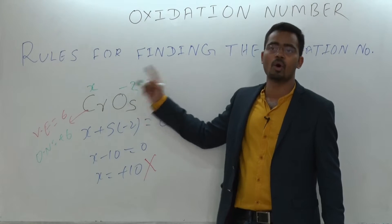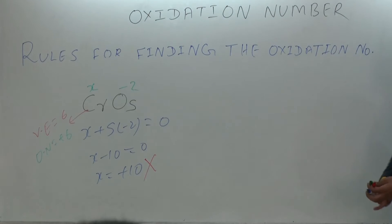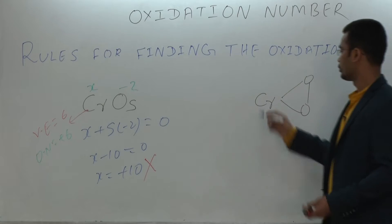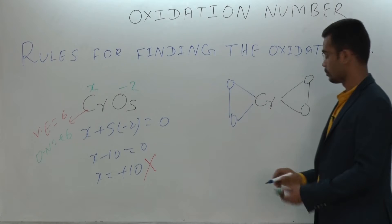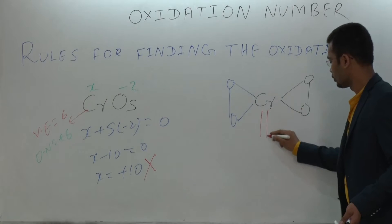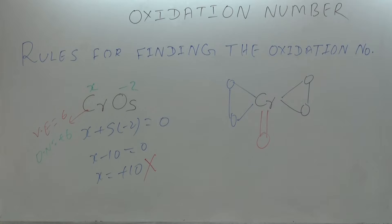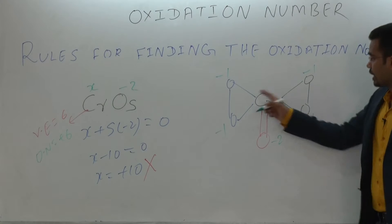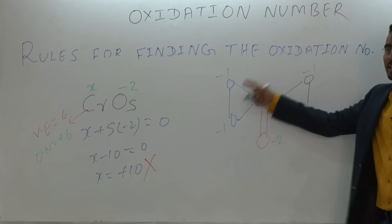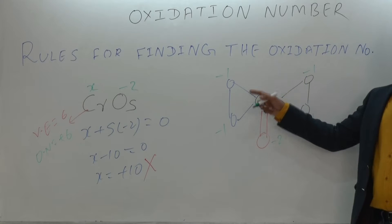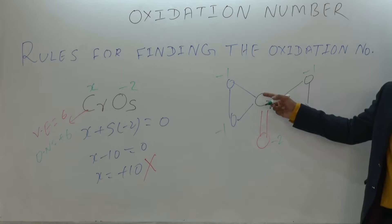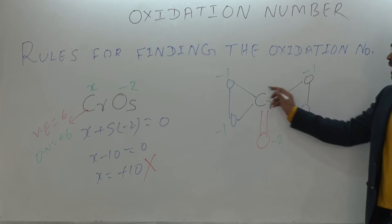The reason is that CrO₅ has peroxide linkages; assigning −2 to all oxygens is wrong. The structure of CrO₅ is the butterfly structure. In this structure, some oxygens are −1 (in peroxide linkages) and one oxygen is −2. The net oxygen contribution gives −6, and since chromium forms 6 bonds, the oxidation state of chromium works out to +6.